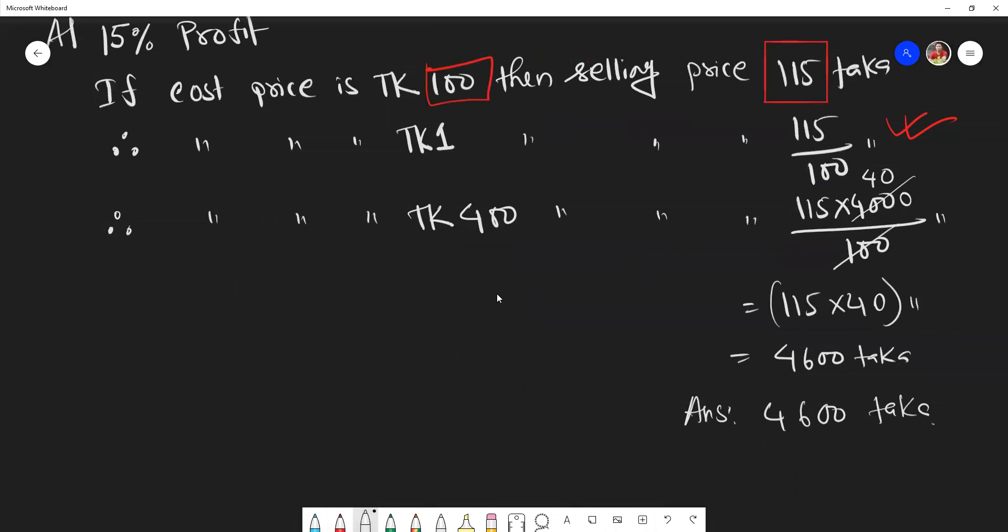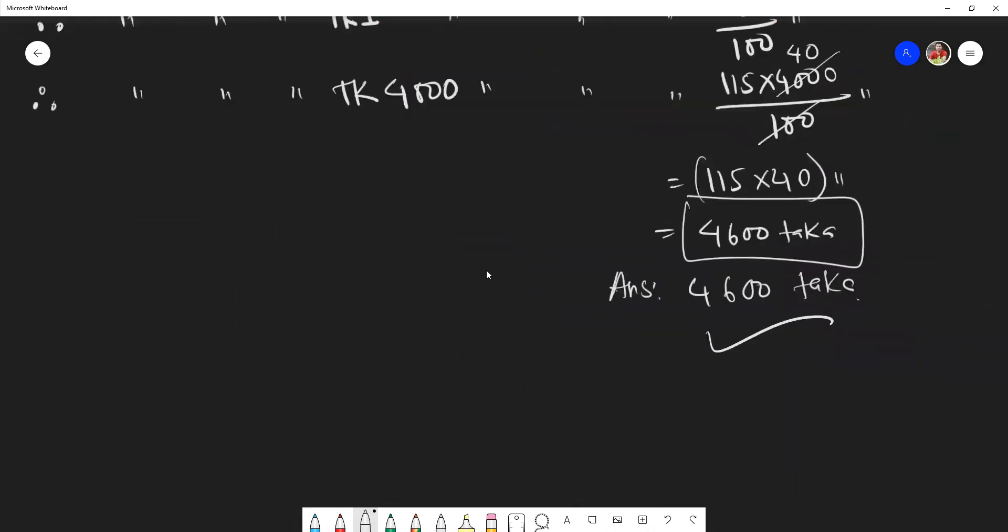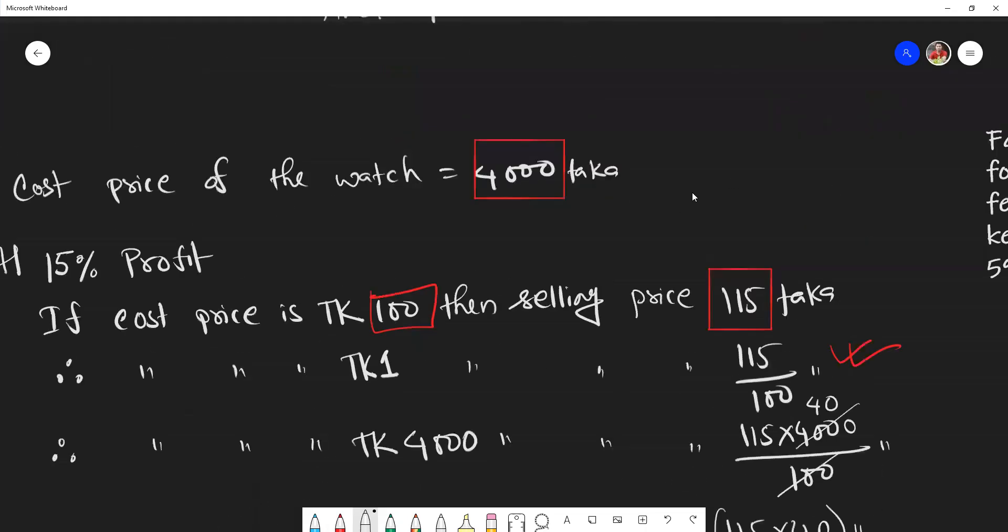If cost price is 4,000 taka, then selling price after calculation is 4,600 taka. So at 15% profit, he will sell it for 4,600 taka. Thank you so much. Don't forget to subscribe to Triangular Kamal Academy, inshallah dear students.